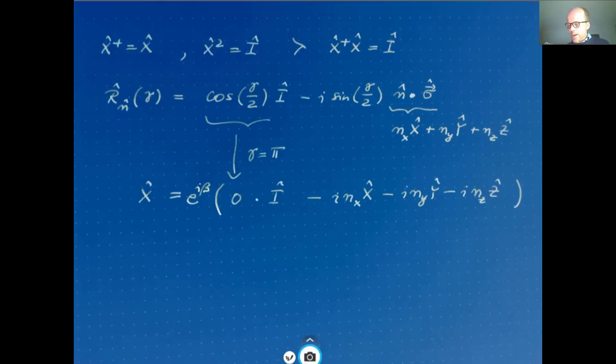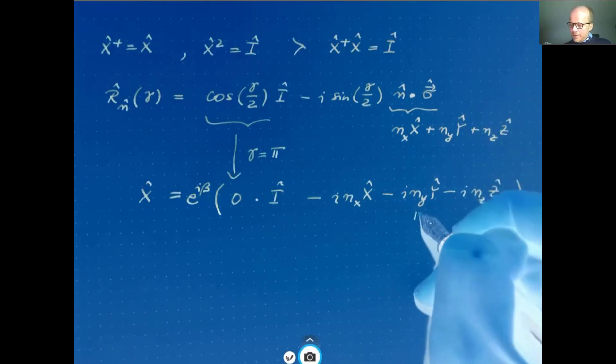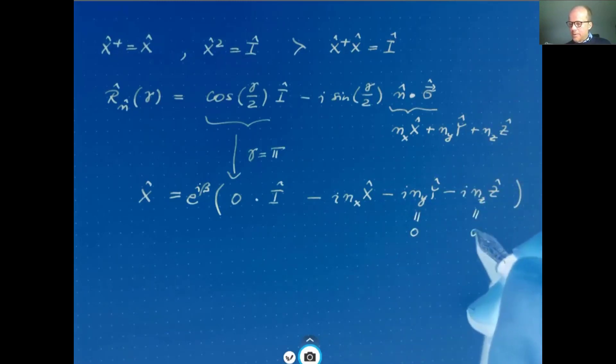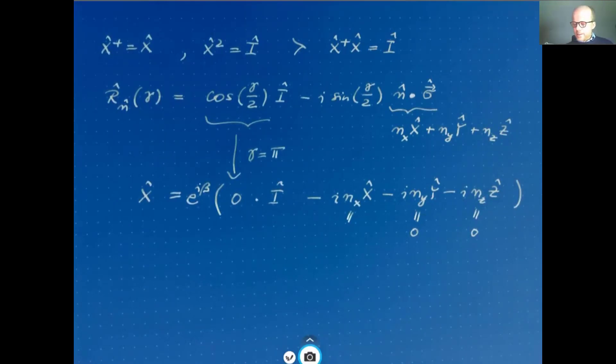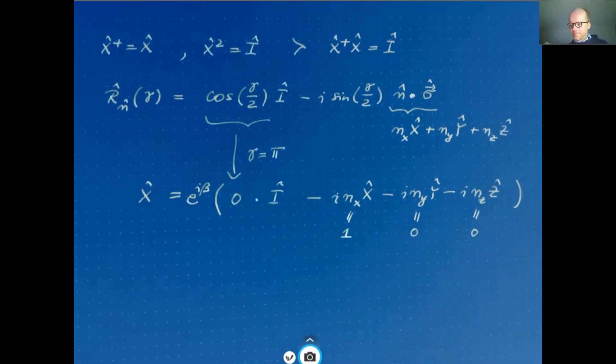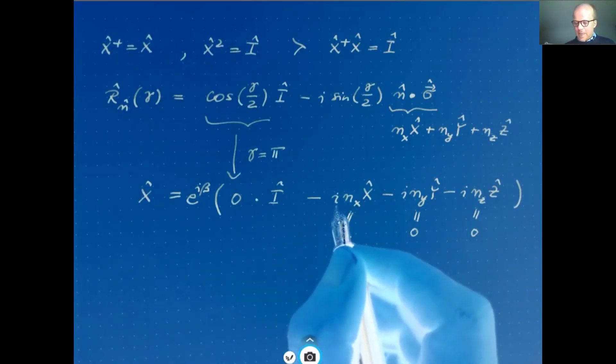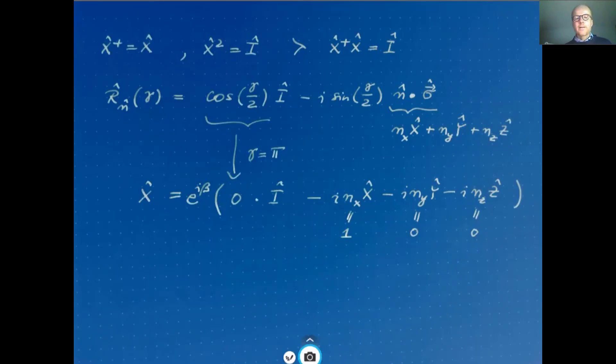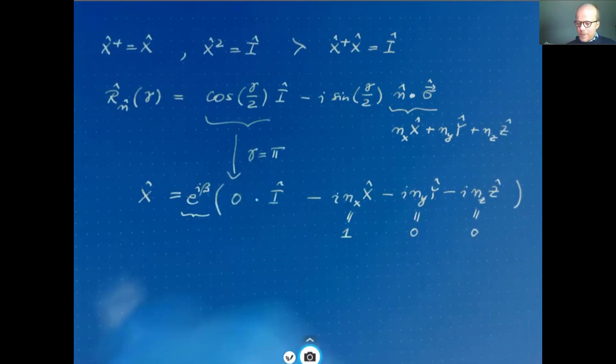Now, since Pauli y, Pauli z don't appear, the y and z components of the unit vector must be equal to zero. The x component of the unit vector, well, since it must be a real unit vector, this must be equal to one. And then we have still a pre-factor minus i. This has to cancel with the phase factor in front, e to the i beta. We can achieve that if we say this is equal to i, which is the case if beta is pi over two.